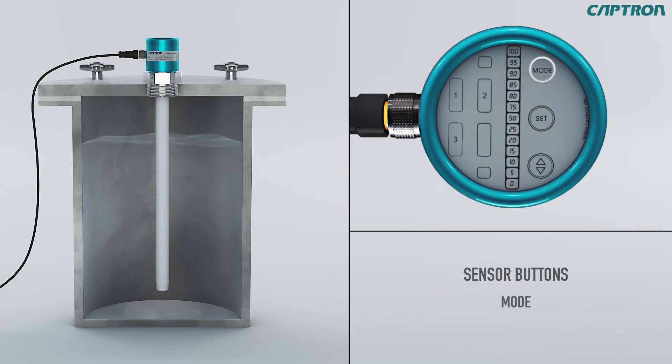The mode button, with which you can reach the next set point without overwriting already saved settings. The set button, with which you reach the next set point and save the current settings. And the up down button, with which you can set values and functions.